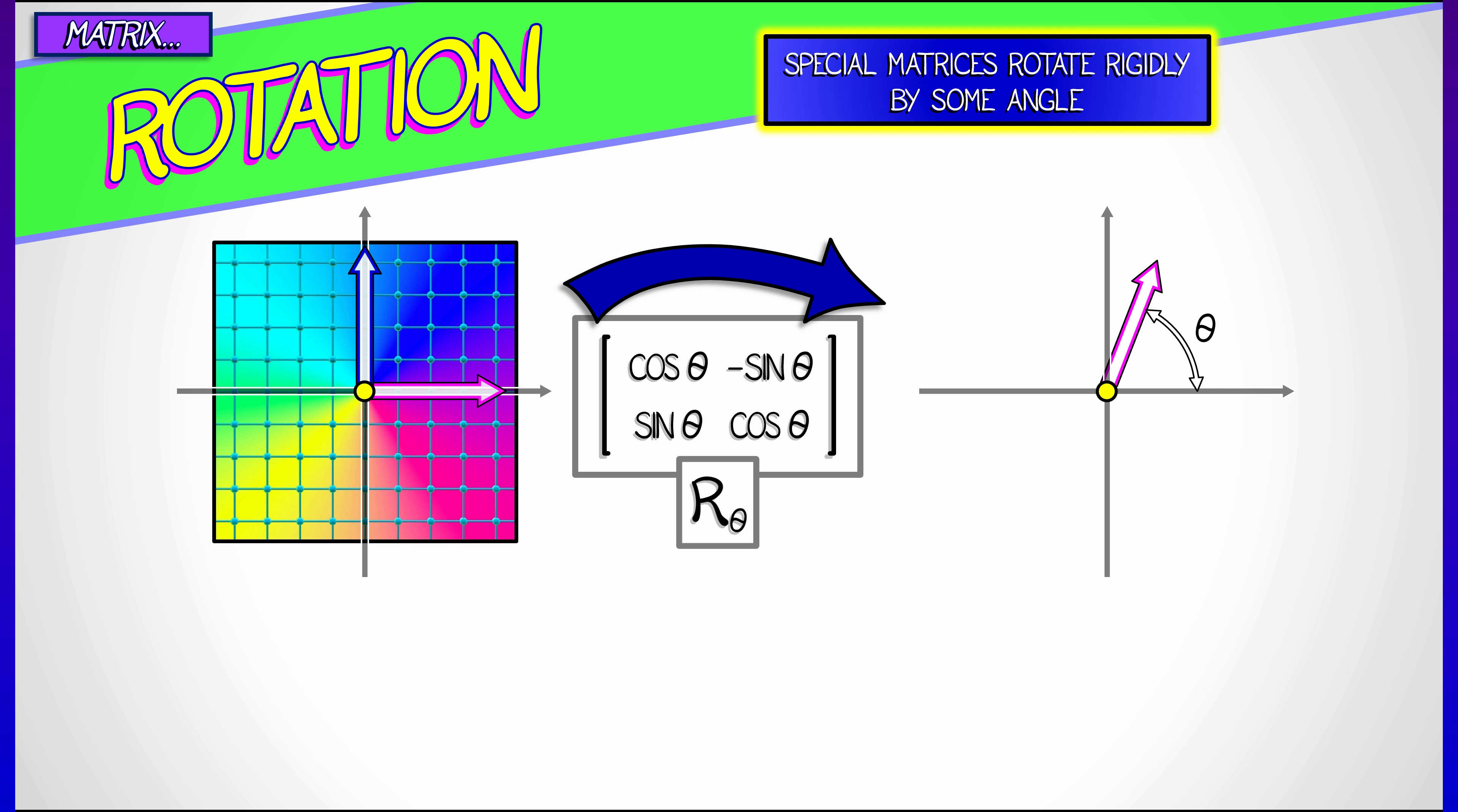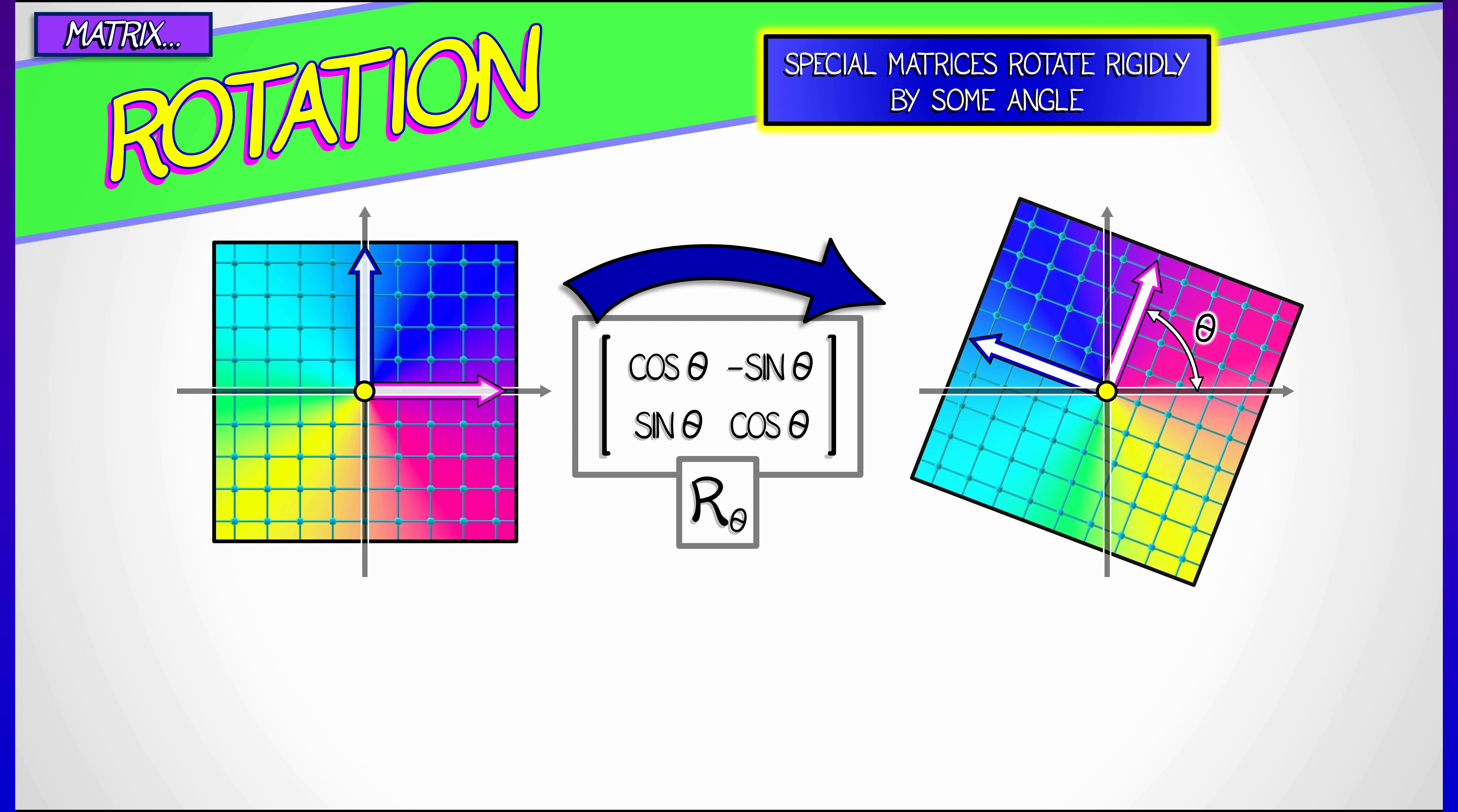So you pick your favorite angle, theta. I don't know, maybe pi over 3 or pi over 4, something like that. Look at this matrix, R sub theta. It takes the i vector to the first column, cosine theta, sine theta. You know what that is. That's got that angle theta in there.